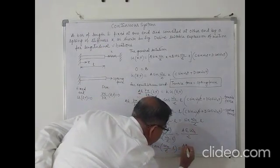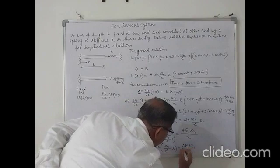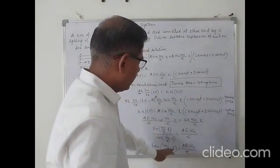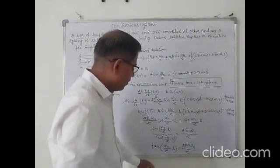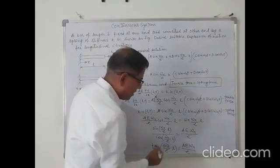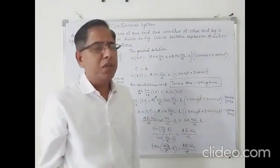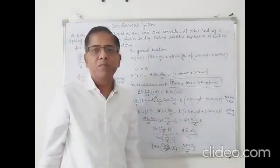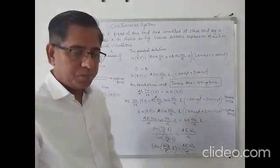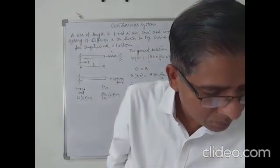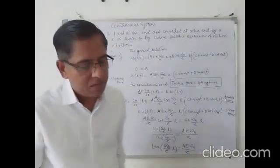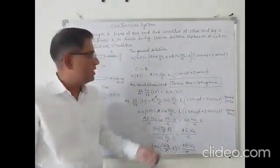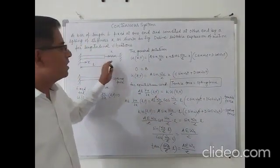This simplifies to: tan(ωn·L/c) = A·E·ωn / (k·c). From this equation you can find out the value of ωn, and you can find out the frequency equation for this particular expression. From this equation you can find out the natural frequency for this particular condition.